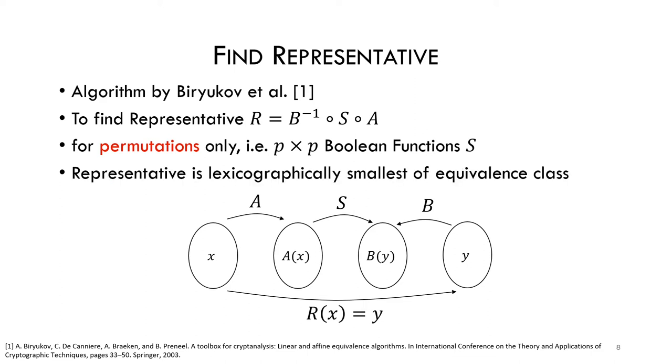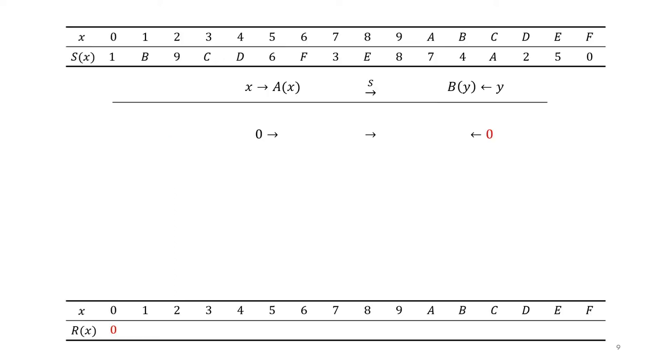The algorithm chooses as a representative the lexicographically smallest S-box in LUT form. Let me demonstrate this. We see here on top the lookup table of an S-box with four input bits and four output bits. There are 16 possible input values and 16 possible output values.